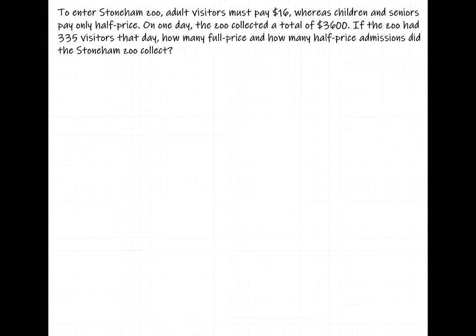To enter Stoneham Zoo, adult visitors must pay $16, whereas children and seniors pay only half price. So half price would be $8 per ticket. On one day, the zoo collected a total of $3,600. If the zoo had 335 visitors that day, how many full price and how many half price admissions did the Stoneham Zoo collect?